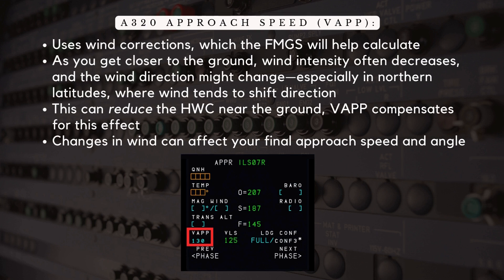Keep in mind that as you get closer to the ground, wind intensity often decreases and the wind direction might change, especially in northern latitudes where wind tends to shift direction. This can reduce the headwind component near the ground, and that's where your wind correction to VAP comes in to compensate for this effect. Always be aware of this potential change in wind when landing, as it can affect your final approach speed and angle.